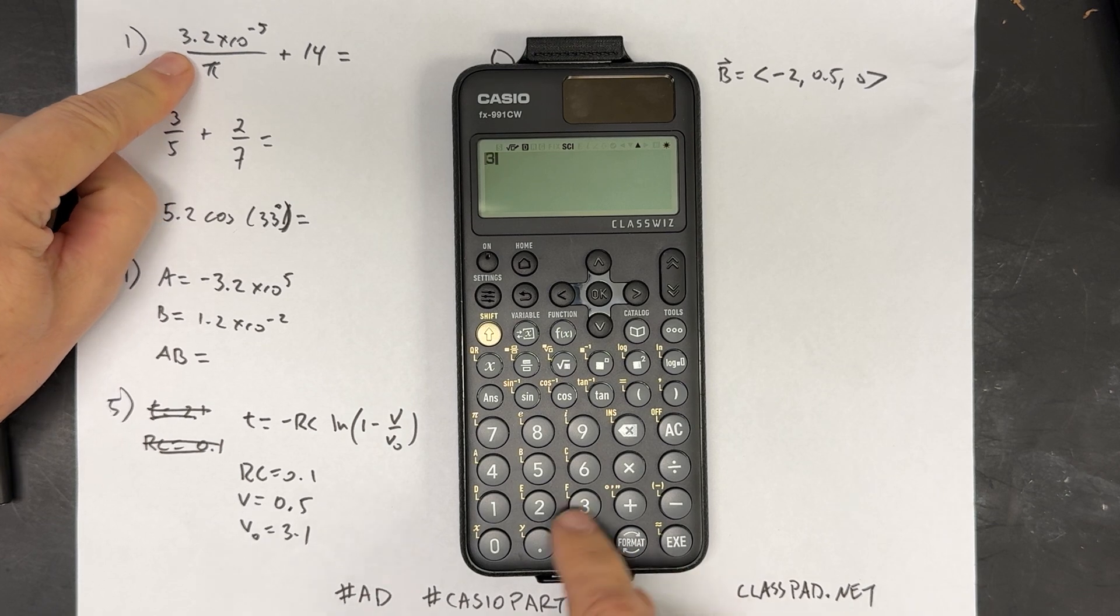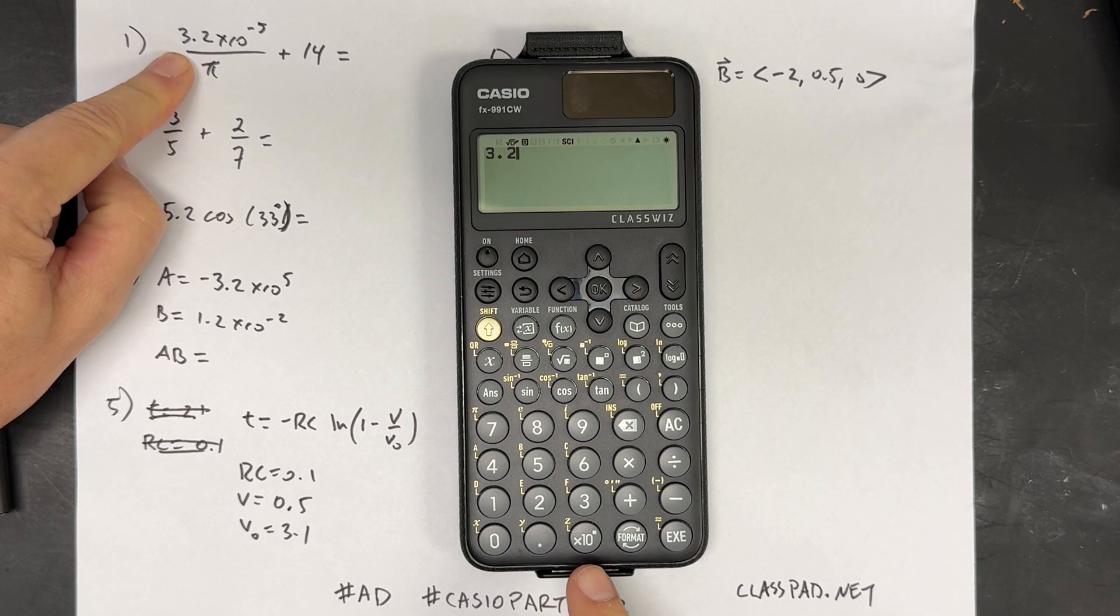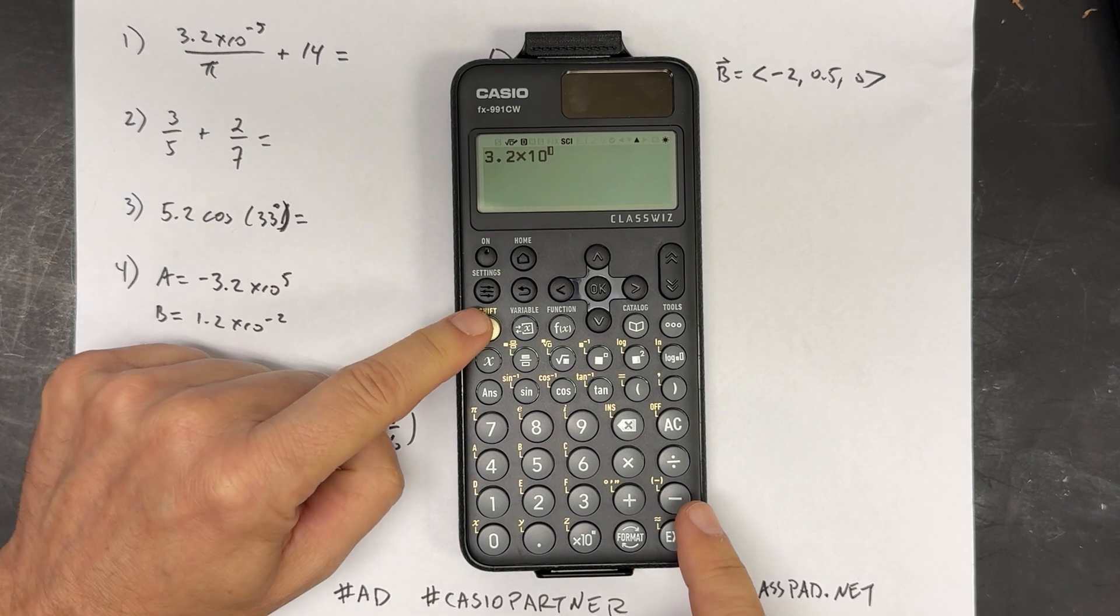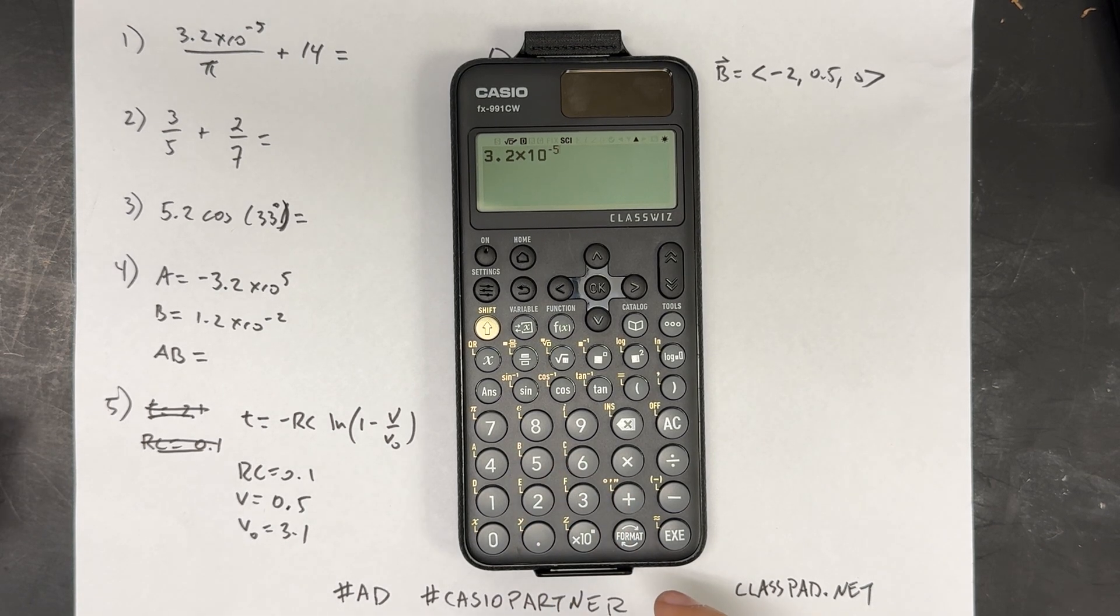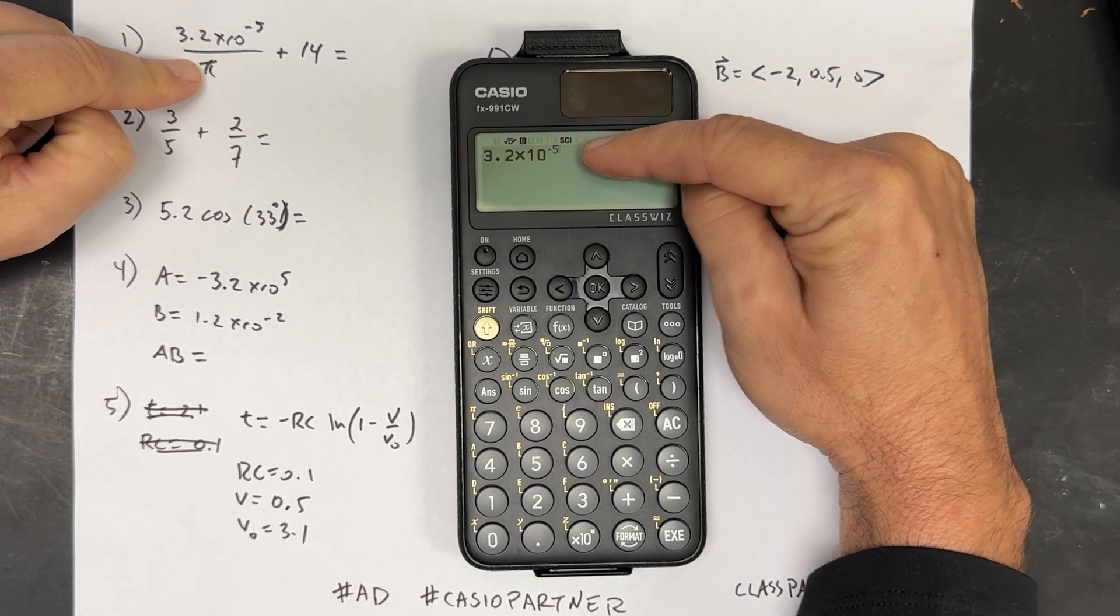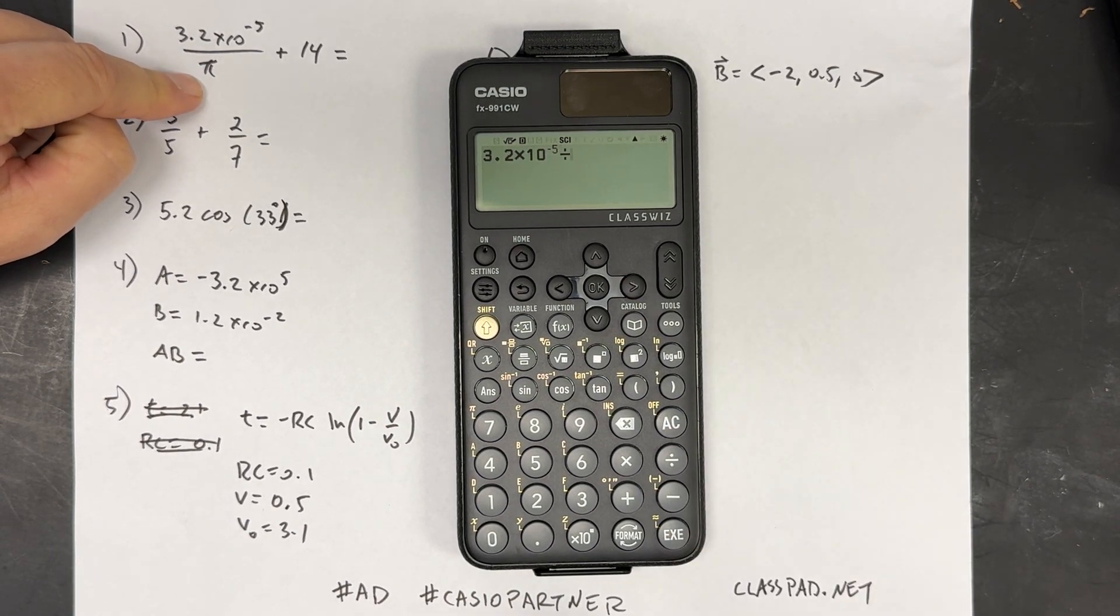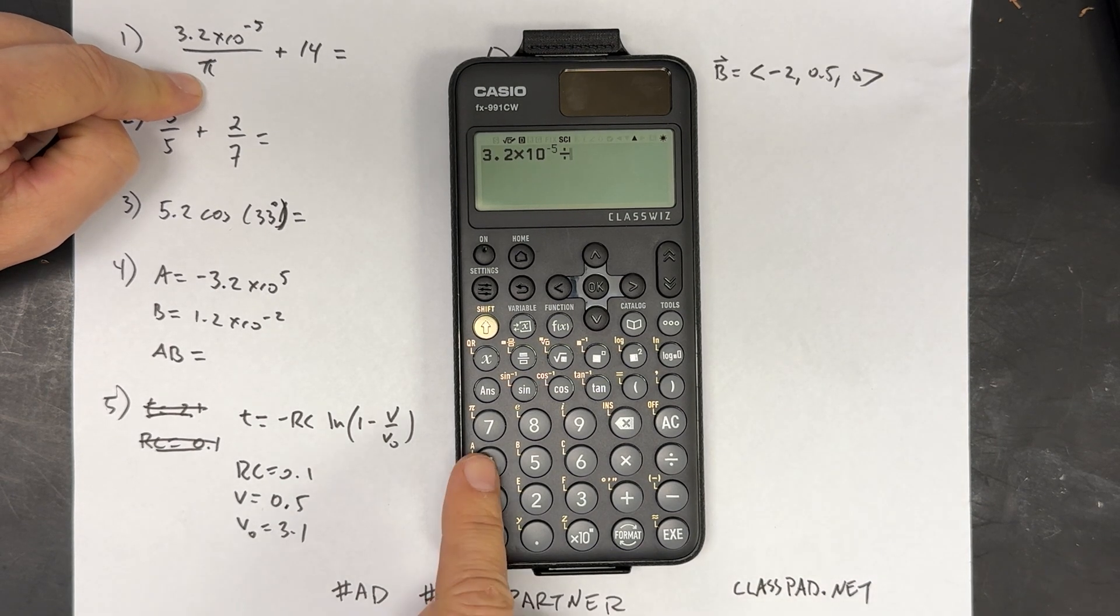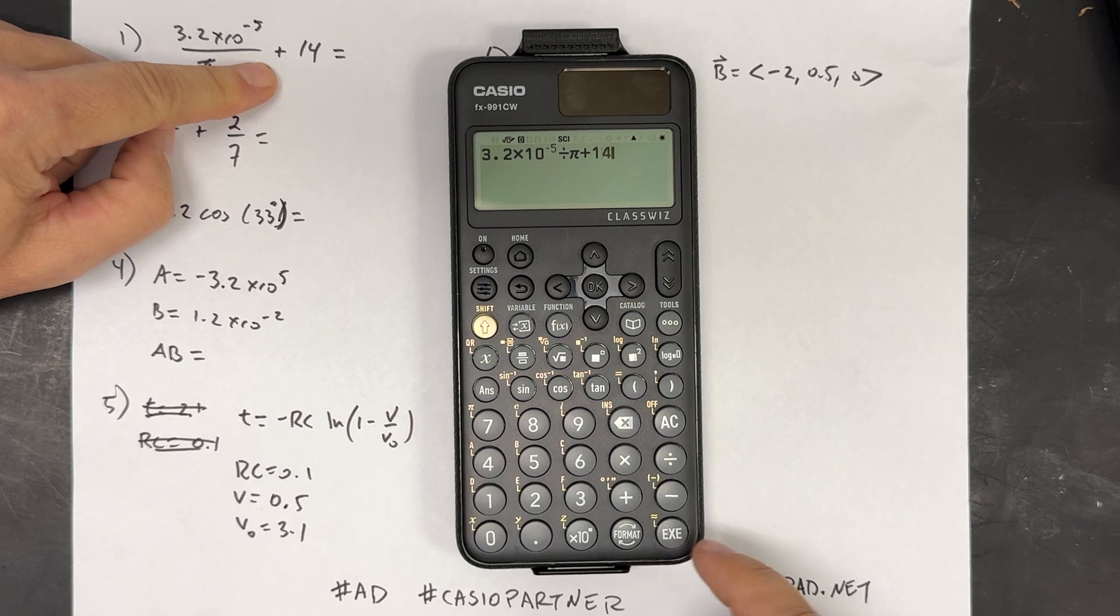I'm going to first enter this number, 3.2. And here, the times 10 to the power instead of that EE button - that really makes a lot more sense. So times 10 to the negative 5th. I did this on purpose because it's not negative, it's shift negative, right? That's a negative multiplied by that. And then 5. Now I want to divide by pi. If I just do divide by pi, notice my cursor is still in the exponent. So I need to get that down. If you just push the arrow forward, it moves to the next spot, which is the normal space. Now I can do divide by pi. I'm going to use the built-in function pi right there. Now I'm going to add 14 and press execute.